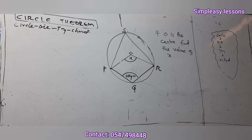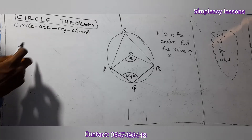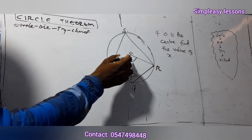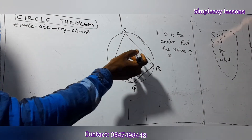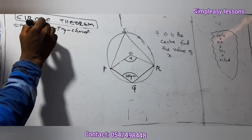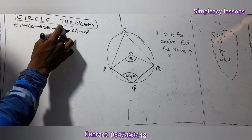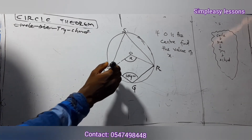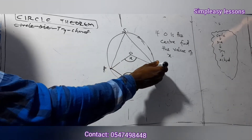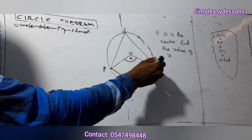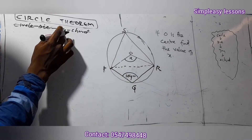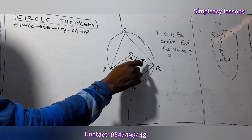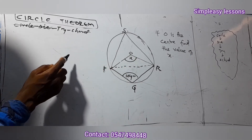New question: if O is the center, find the value of x. Checking the mnemonic — no circle at a point, so cancel circle. No diameter, so cancel diameter. We have a triangle and a chord. Let's focus on the chord first — any two points on the circumference form a chord.